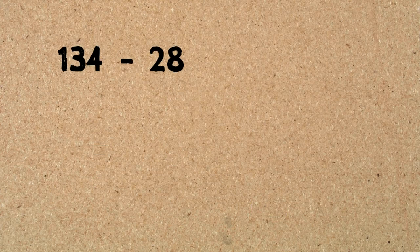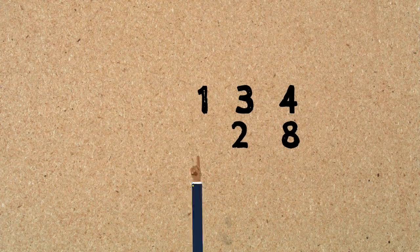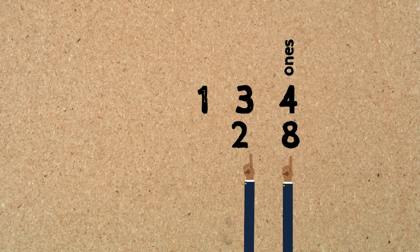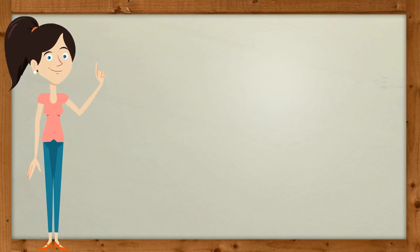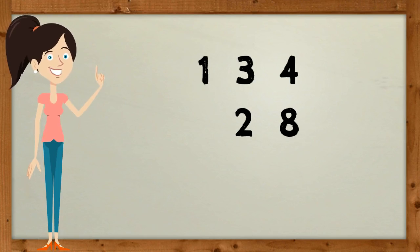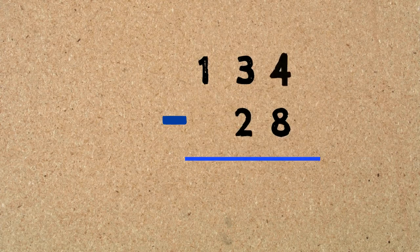Now let's try another problem: 134 take away 28. The first thing we always do is stack the numbers up — the bigger number goes on top, the smaller number at the bottom — and all place values are lined up so ones are in one column, tens in one column, and hundreds in one column. We draw a line underneath for our answers and a minus sign on the left-hand side.